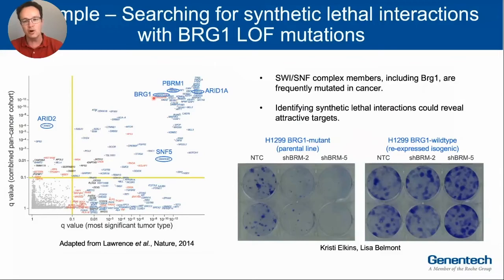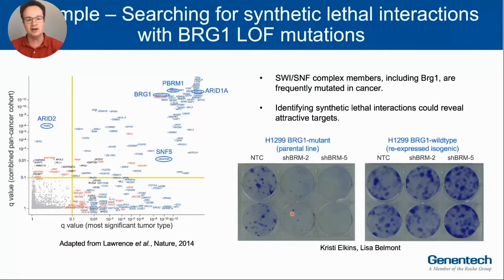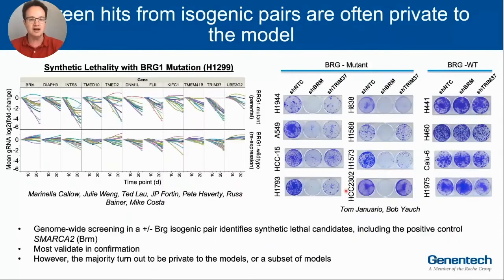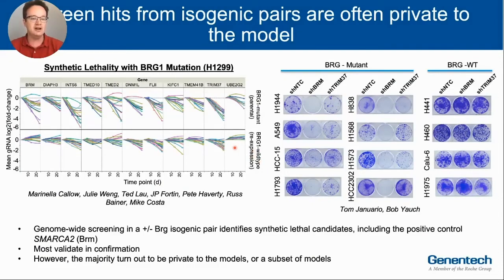We did a number of these screens early on when CRISPR first came onto the scene, including one looking for synthetic lethality with mutations in the SWI/SNF chromatin remodeling complex, which is very frequently mutated in cancer. One of those members is BRG1, and cells that harbor a BRG1 mutation are dependent on its functional paralogue known as Brahma. In the BRG1-mutant line H1299, that line is sensitive to knockdown or knockout of Brahma, and we could rescue that dependency by re-expressing wild-type BRG1. We could then take this isogenic pair and conduct a genome-wide screen to look for new dependencies beyond just the Brahma dependency in the context of BRG1.